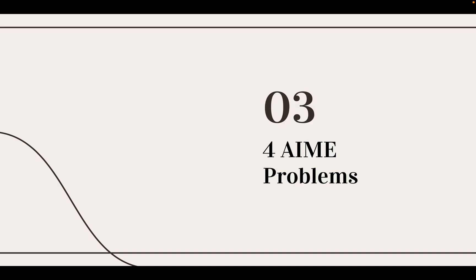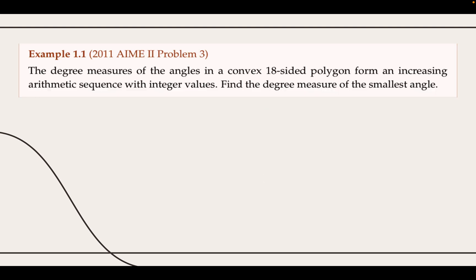Now that we have gone over some of the most useful formulas regarding arithmetic and geometric sequences, let's go through four past AIME problems to practice these new skills. We begin by solving problem 3 from the 2011 AIME II. The problem reads: the degree measures of the angles in a convex 18-sided polygon form an increasing arithmetic sequence with integer values. Find the degree measure of the smallest angle.